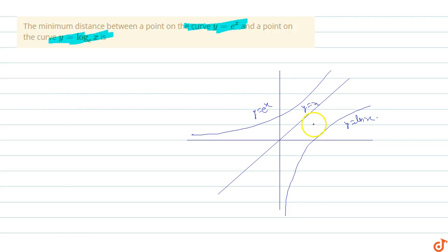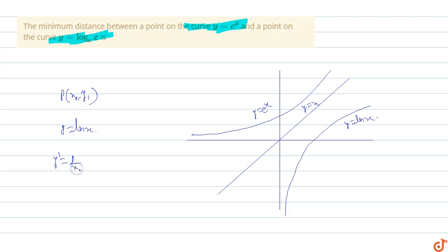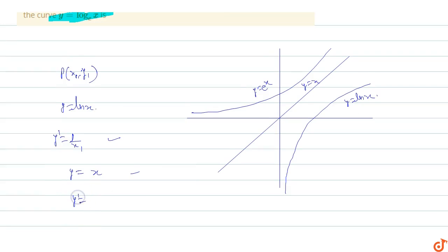Let P be any point (x1, y1) on the curve y equals ln x. The slope of this curve is y' equals 1 upon x, so at x1 it is 1 upon x1. Since the curves are symmetrical about y equals x, the slope of the tangent to this curve equals the slope of y equals x, which is 1. So 1 upon x1 equals 1, giving x1 equals 1.